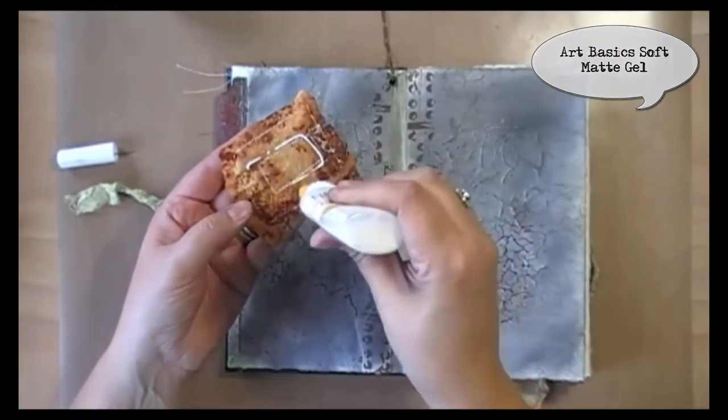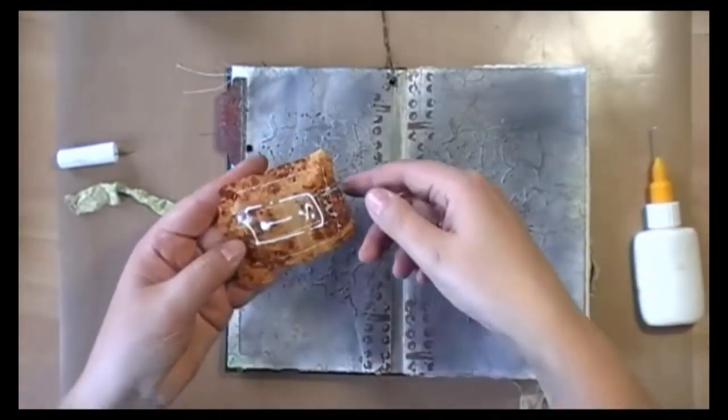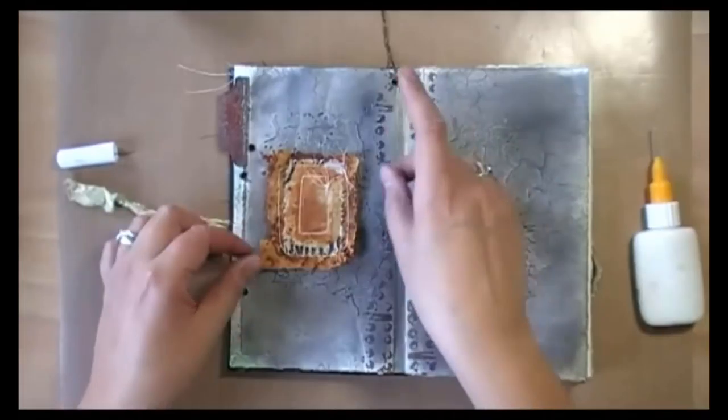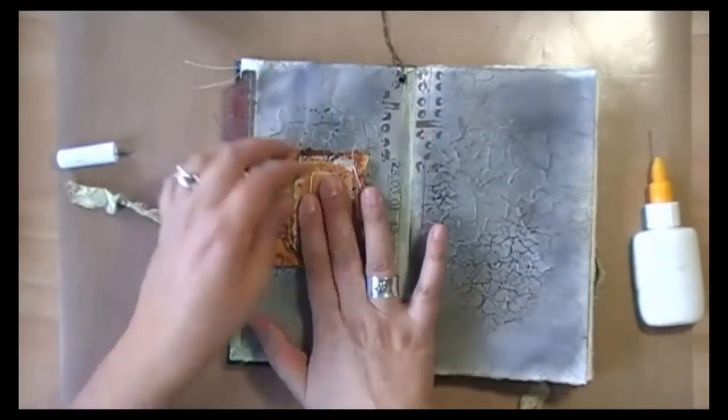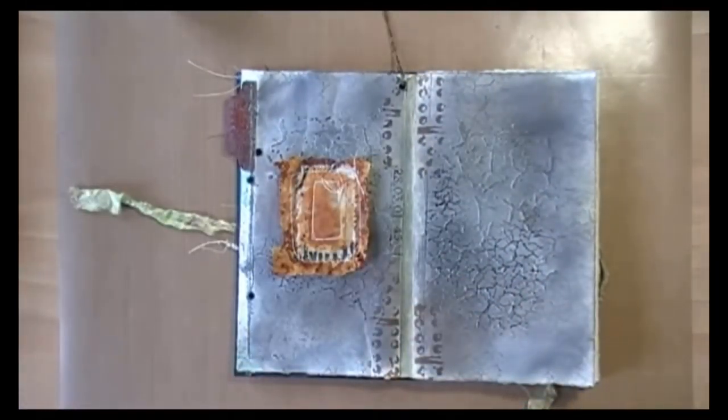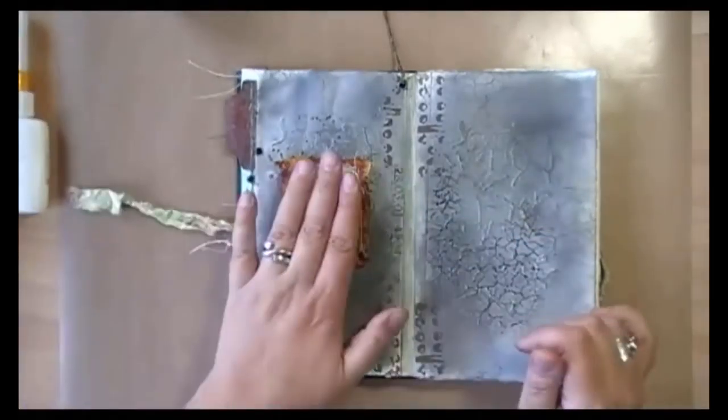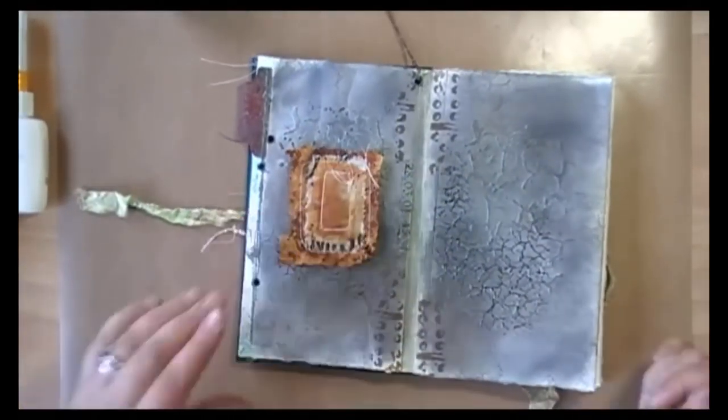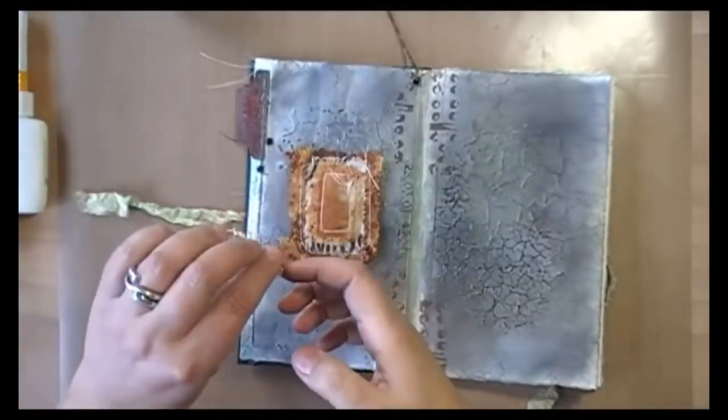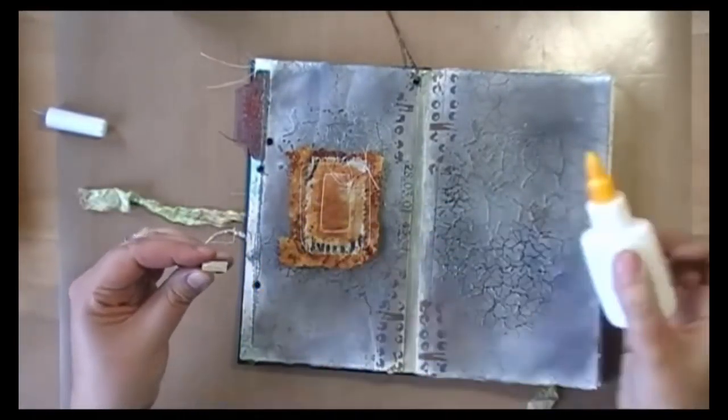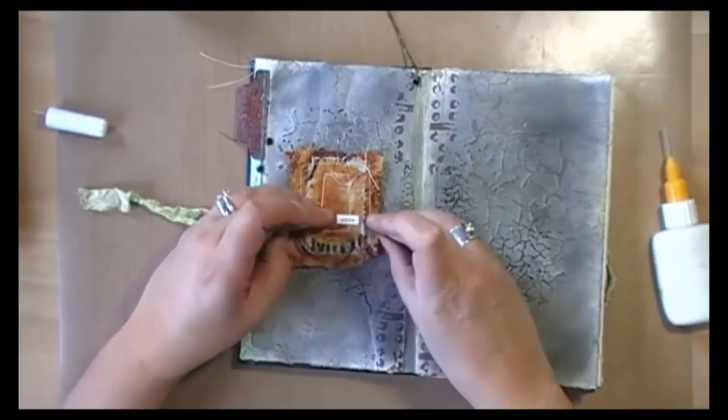I sewed the pieces together. And now I'm adding some soft matte gel, again from Finnebvar, just to glue it down. And then adding my word, which is, this is just a Tim Holtz Chit Chat sticker.